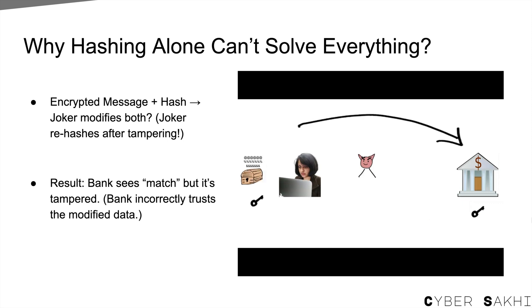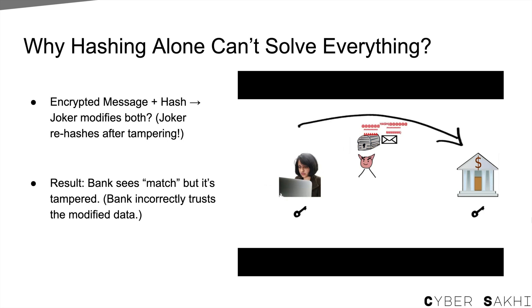But we also saw that this was a very bad practice for proving integrity. If joker can modify the ciphertext, he can also generate a new hash of the modified ciphertext and send that along. The bank thinks everything is good because the hash matches. So how do we ensure that the hash itself can't be forged by joker? Let's dive into authenticity.